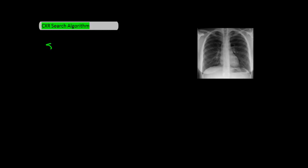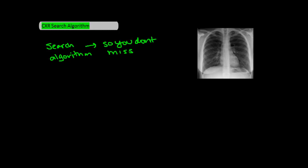The most important thing you can do for reading imaging is to develop your own search algorithm. The reason this is so important is because our brains aren't designed to see things that we're not looking for. And so if you want to find subtle signs, you're going to need to develop a system that prevents you from missing findings.